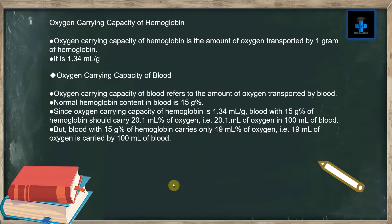The oxygen carrying capacity of hemoglobin is the amount of oxygen transported by one gram of hemoglobin. It is 1.34 milliliters per gram.